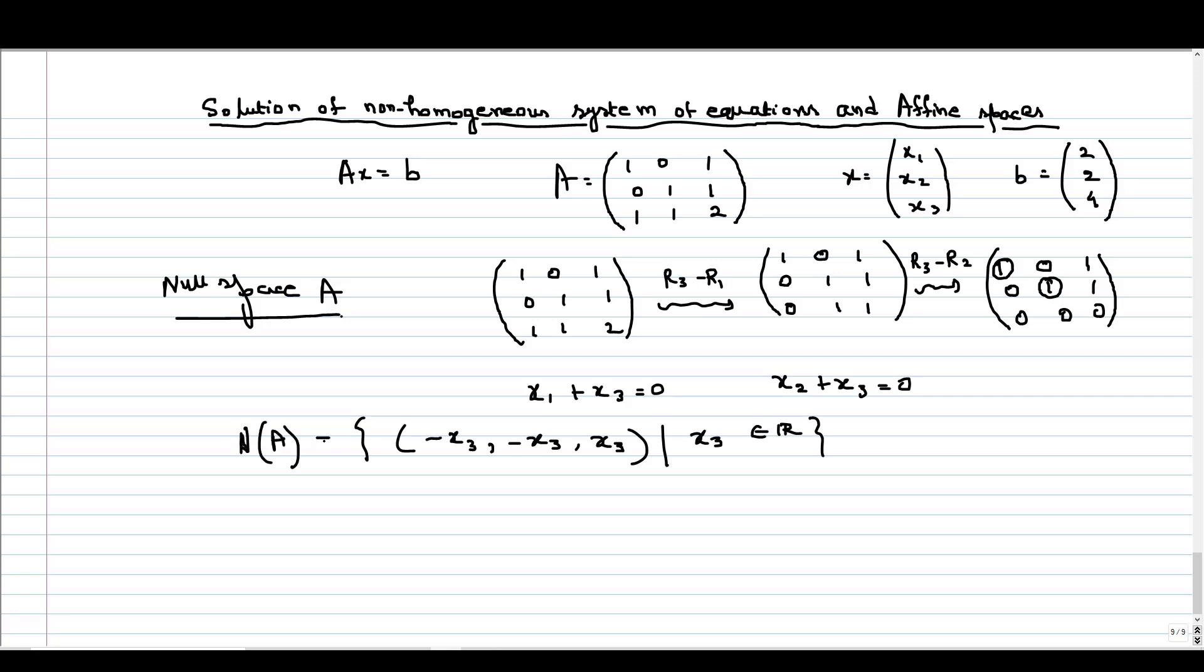So let us denote it as N(A). This is our null space of A. The basis of this space is the spanning set of the vector minus 1, minus 1, 1. Whenever we take any vector V from the null space of A, then AV is equal to 0. These elements of null space are the solution of the homogeneous system Ax equals 0. But we want to find the solution for the system Ax equals b.